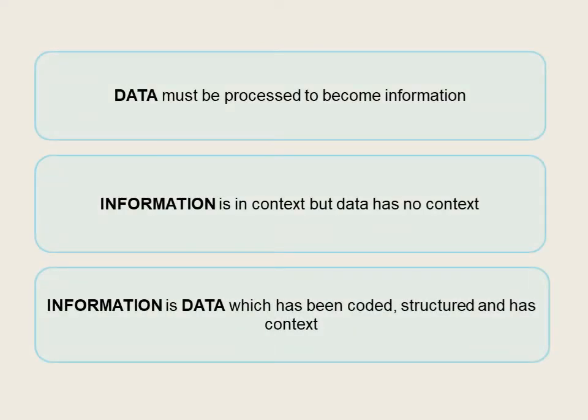A bit of a recap for you. Data must be processed to become information. Information is in context but data has no context. Information is data which can be coded, structured and has context. So data alone needs to have a bit more information with it in order for it to be understood.